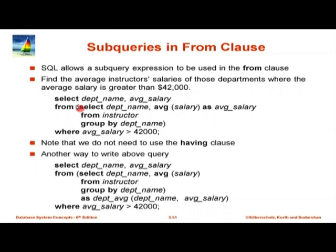What this shows is that the HAVING clause is optional — you can rewrite it like this. When I have a subquery in the FROM clause, I may need to give it a name. I have given this subquery the name 'dept_average'. I can also give names to individual attributes: department_name I have kept as 'a', and avg_salary I renamed here. In the second version, instead of renaming in the SELECT clause, I renamed it by saying AS dept_average (department, avg_salary). This is one way to use subqueries in the FROM clause.